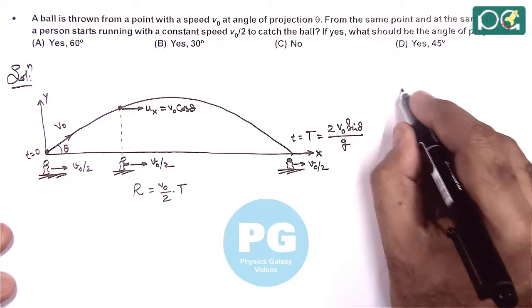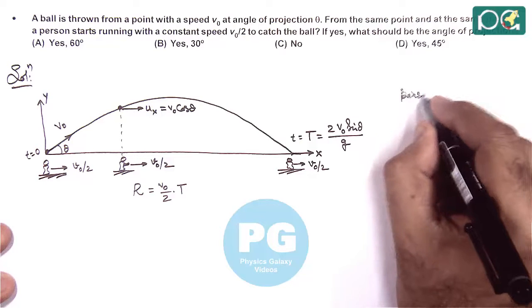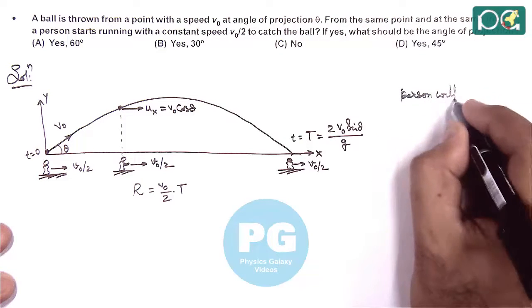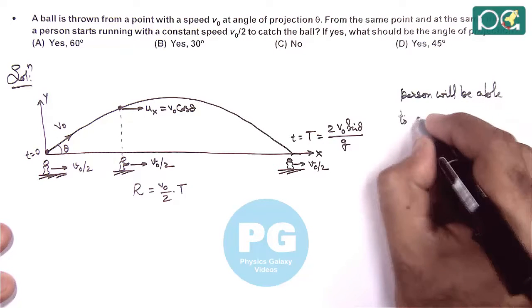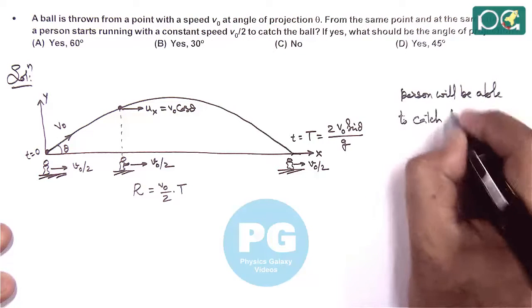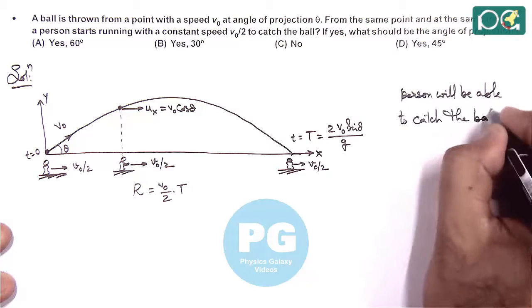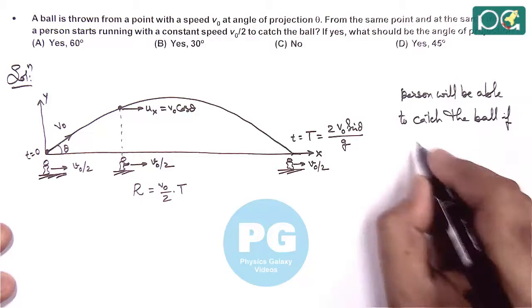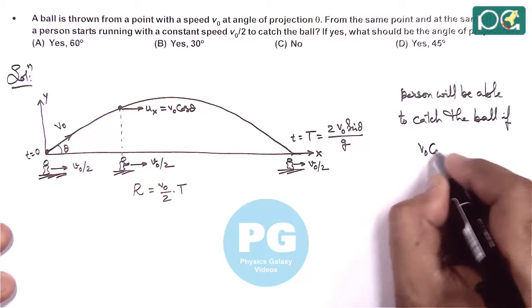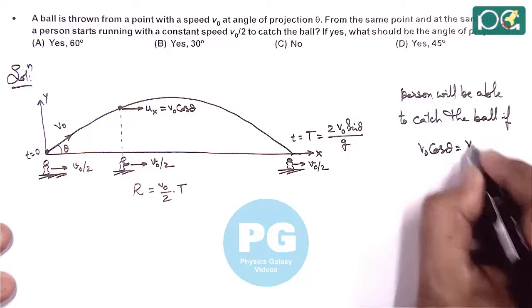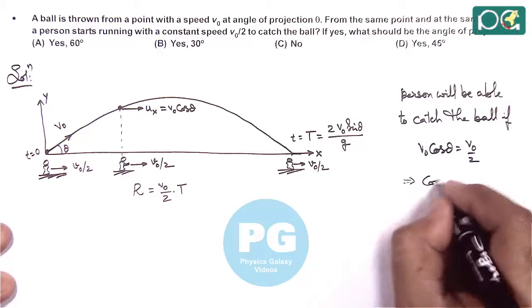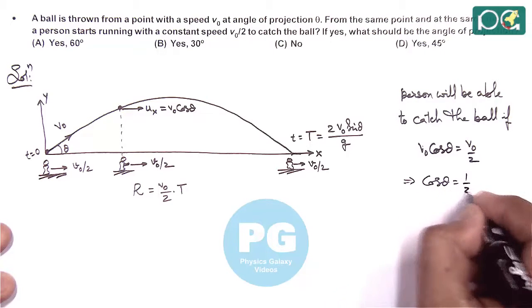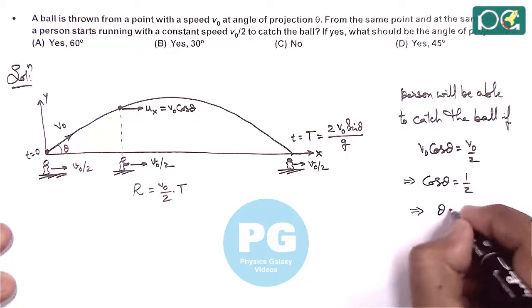Or we can say, the person will be able to catch the ball if V-naught cos theta equals V-naught by 2. Here V-naught gets cancelled out, this gives us cos theta is 1 by 2. This implies theta equals 60 degrees.